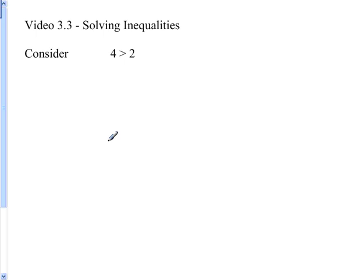What I want to do is look at some different cases and see if doing different things to both sides of the inequality still makes it a true inequality. So we start off with the inequality 4 is greater than 2, which of course it is. What happens if we add 2 to both sides? We see that's still true.